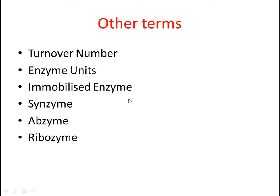The next term is immobilized enzyme. Enzymes are now used in every field. Most enzymes are obtained in pure form and the cost of purification is very high. Once we have purified enzyme and add it to a particular reaction, it is difficult to remove that enzyme from the product. So scientists immobilize the enzyme — they bind it to a particular matrix, cross-link it to a particular substance, or pack the enzyme in a particular matrix. Such a packed enzyme is called an immobilized enzyme.